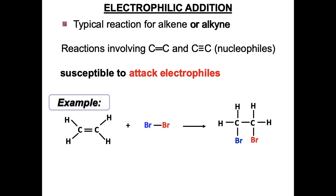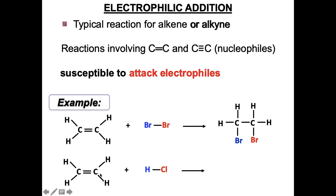For the second example, we have an alkene reacting with HCl. Our nucleophile is the alkene and the electrophile is H. So the alkene will attack the electrophile and one carbon will get hydrogen. Note that the left carbon has two hydrogens in the reactant, and in the product it still has two hydrogens, with a new hydrogen added to the other carbon, which also receives Cl.